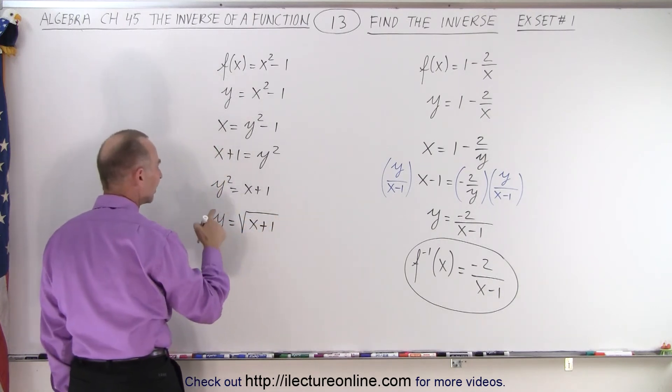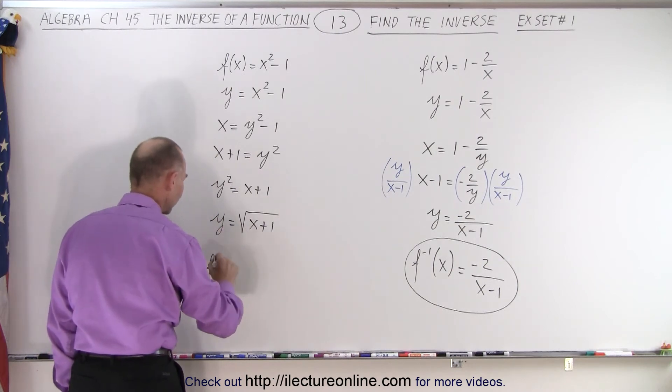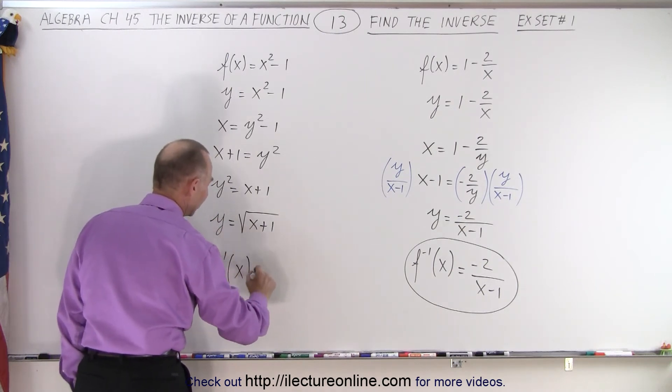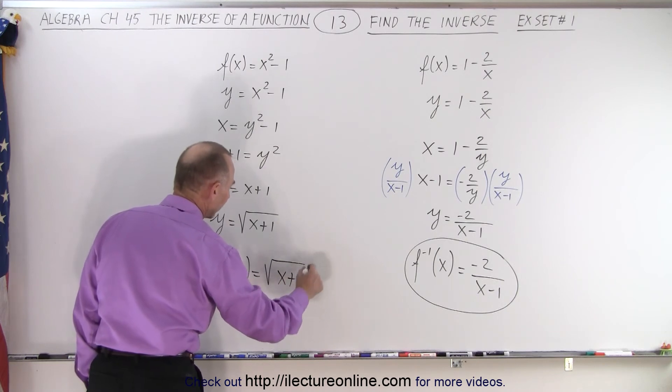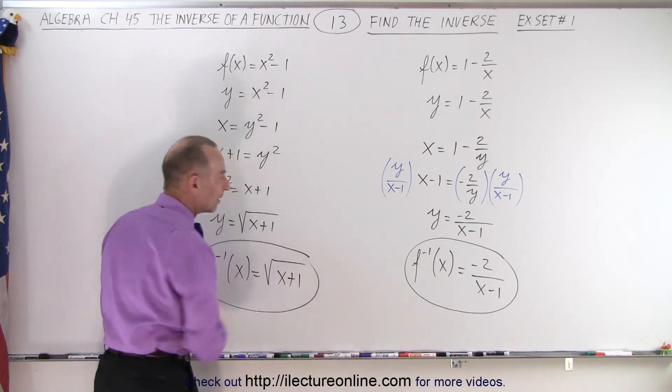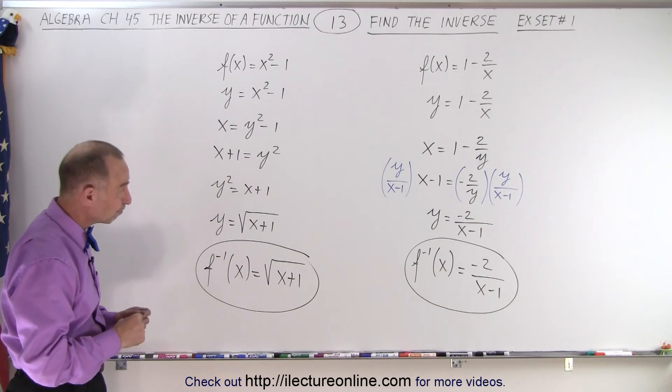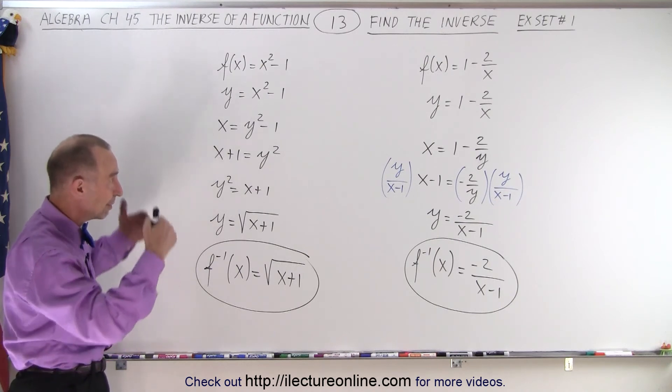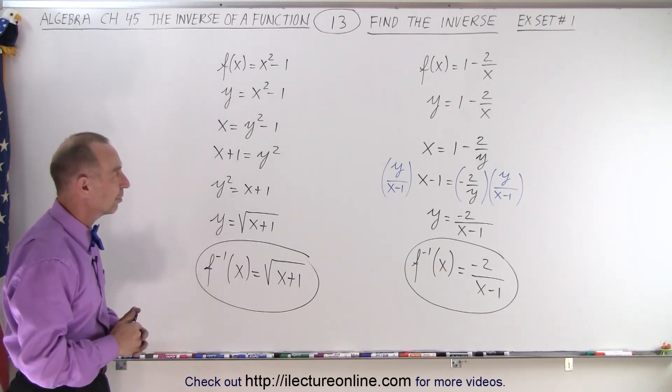And then we can say that this is the inverse. So the inverse of the function is equal to the square root of x plus 1. And that is how we find the inverse of those two examples. Not too bad, as long as we follow the procedure as it was given to us.